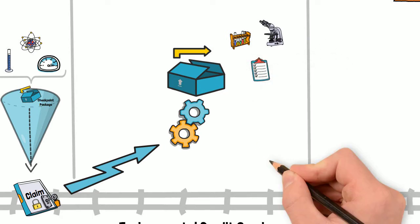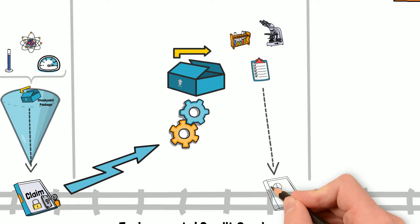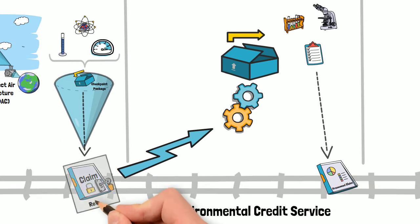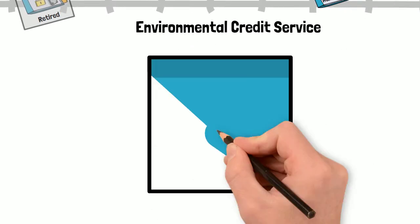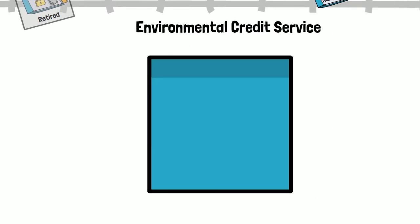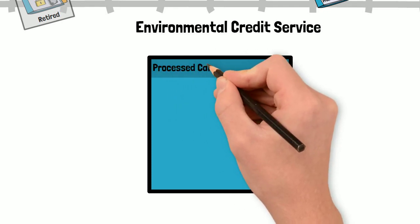Once validation and verification are complete, the verifier creates a processed claim and the original submitted claim is retired and cannot be verified again. The processed claim provides a detailed report as to the total quantity of carbon removed along with all the attributes or properties that differentiate the processed claim.